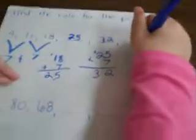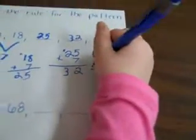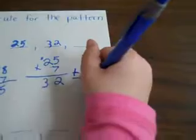And then I have to do 32 plus 7 equals 39.